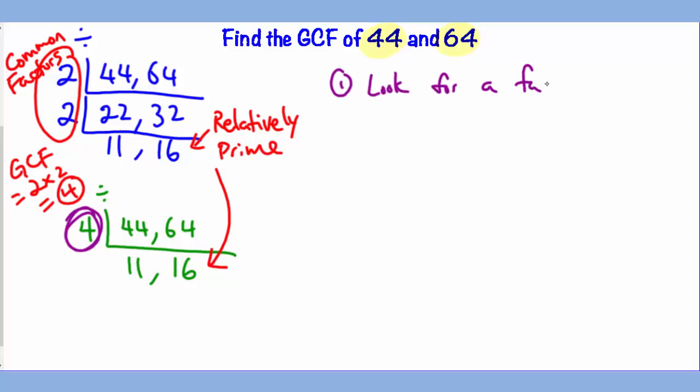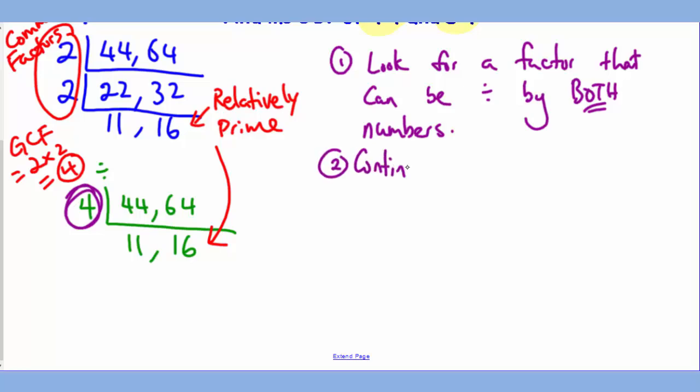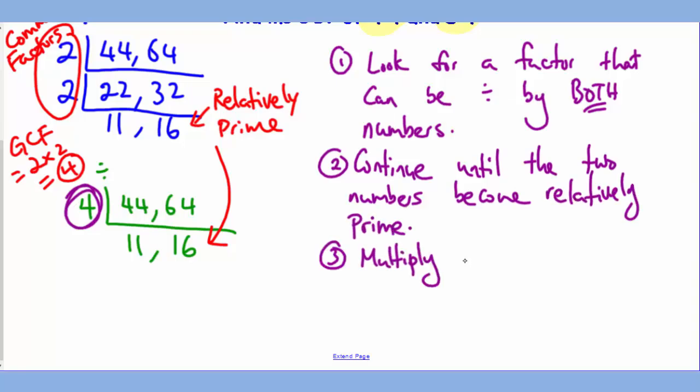To recap, the first thing you should do is to look for a factor that can be divided by both numbers. You will continue until the two numbers are relatively prime. And since GCF stands for the greatest common factor, you will multiply the common factors on the left side together to get the biggest.